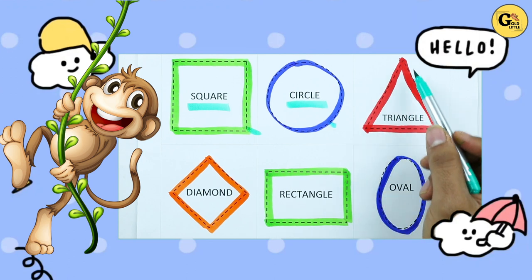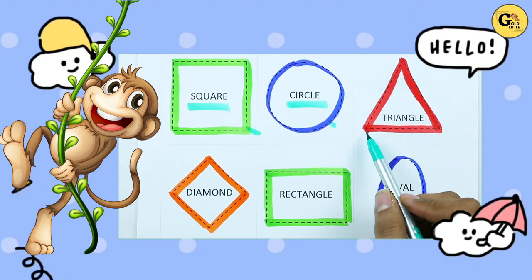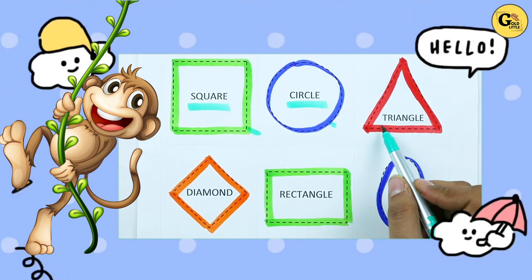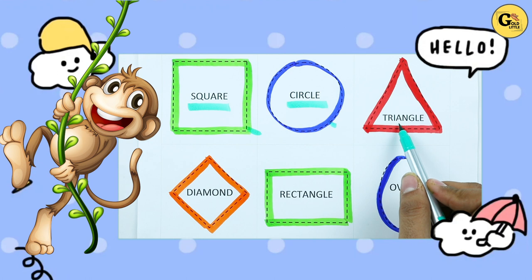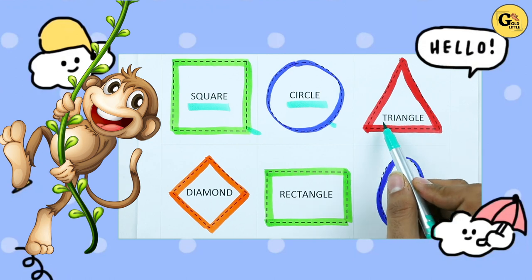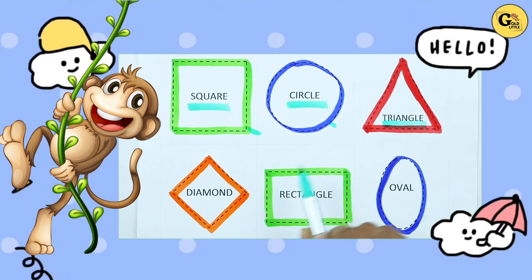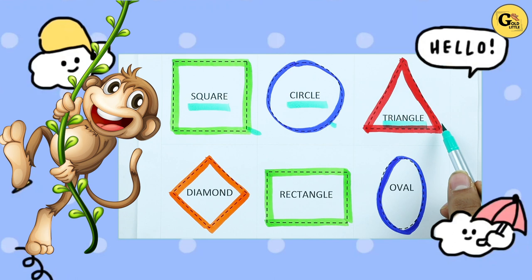Which shape is this? Triangle. T-R-I-A-N-G-L-E. It's a triangle with red color.